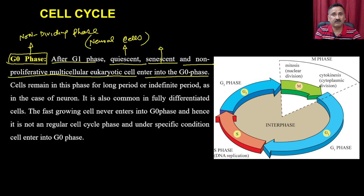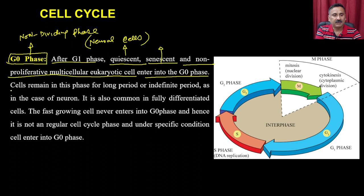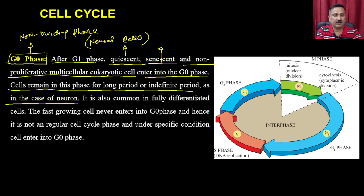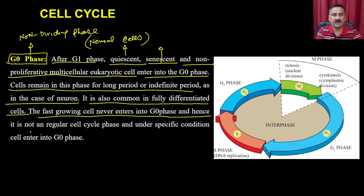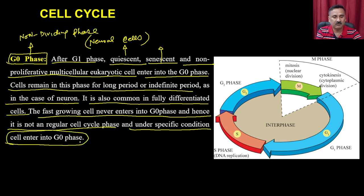Cells of the brain, spinal cord, and neural system do not divide because they are terminally programmed not to. They always remain in the G0 phase and never enter any cell cycle stage. Cells remain in this phase for a long or indefinite period, as in the case of neuron cells. It is also common in fully differentiated cells.